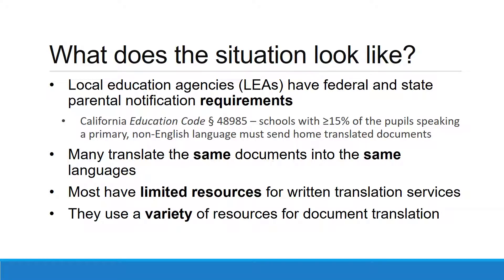What does the situation look like out there in the school districts? We know that federal and state laws require local educational agencies to provide parental notifications in a format and language that parents can understand. California Education Code Section 48985 requires schools with 15% or more of the pupils speaking a single primary language other than English to send translated documents to the home. These requirements represent a significant workload for local educational agencies.